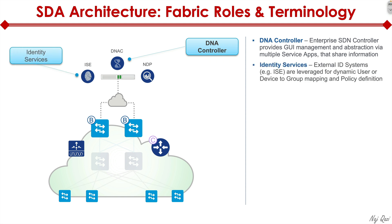The next component is ISE, or Identity Services Engine. This is very important for the SDA solution because users are authenticated by ISE and the security policies configured in Cisco DNA. SDA helps ensure policy consistency by defining and enforcing policies, preventing unauthorized access and user mobility.